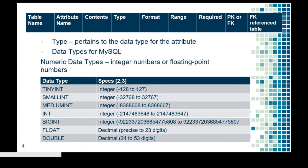Now let's go to the next part: the type. Type pertains to the data type for the attribute. MySQL, as one of the database management systems, has different data types. There are numeric data types, which are integer numbers or floating point numbers. The numeric data types for MySQL are: TINYINT, SMALLINT, MEDIUMINT, INT, BIGINT, FLOAT, and DOUBLE. These numbers differ in terms of ranges and the size of numbers they can hold.